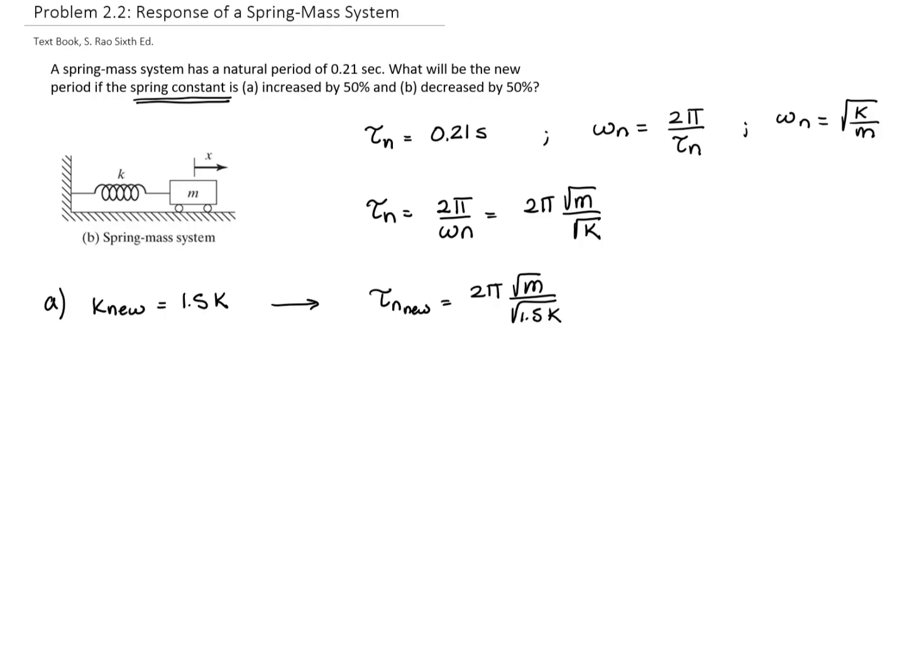So since I don't have the mass, I will solve for the mass right here, which will be the original natural period times the square root of the constant of the spring divided by 2π. And I am going to insert that over here.